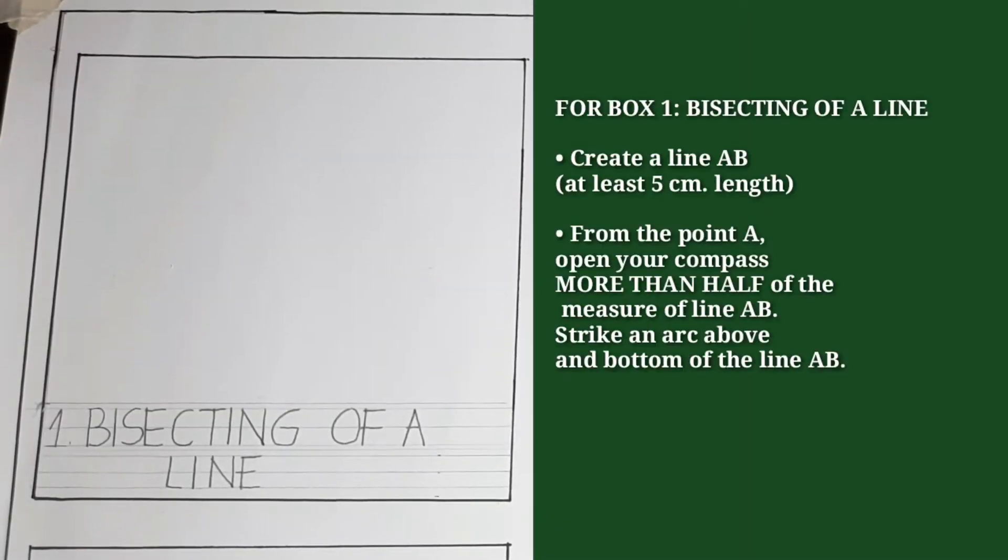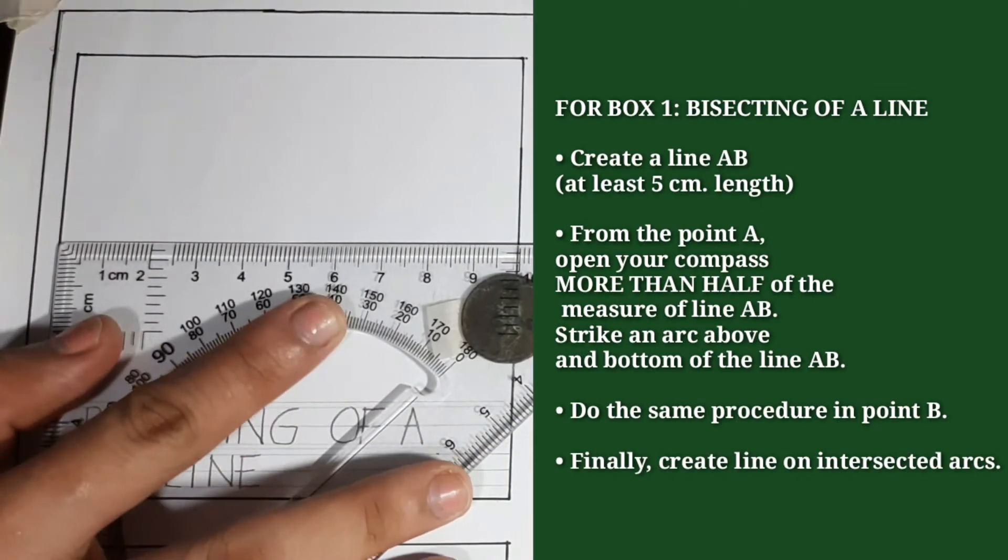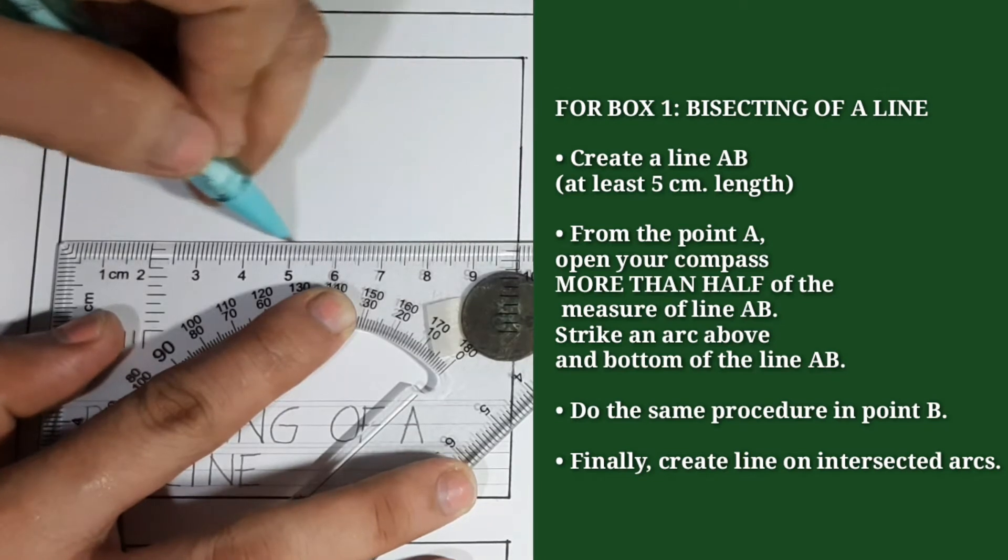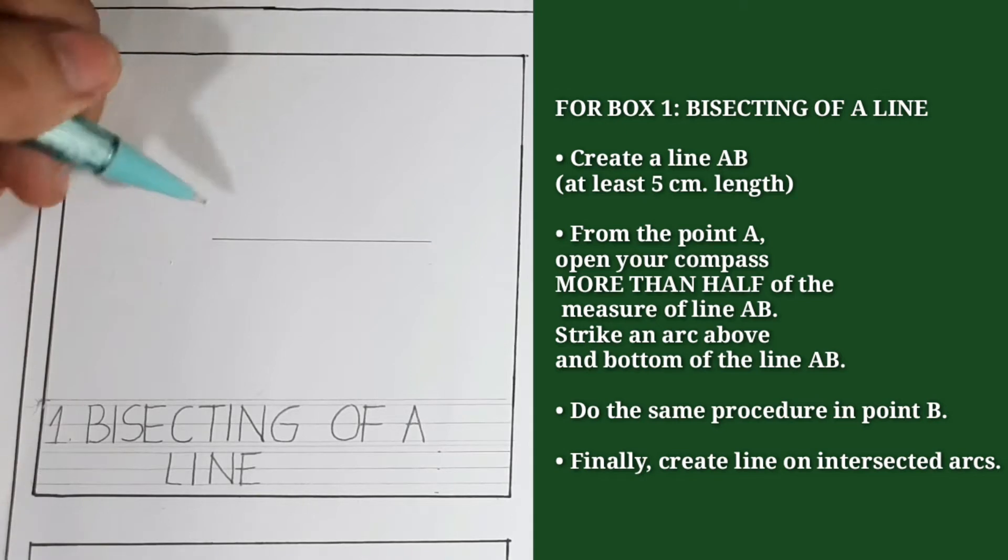For the first box, we will be doing the bisecting of a line. First, create a horizontal line. From that line, we will name a point.